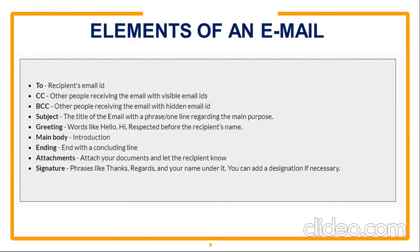So these are the important elements or components of an email: To address, CC, BCC — they are optional. In CC, everybody will come to know each other's email ID — it's like an acknowledgement to the master person. In BCC, though they are receiving the mail, they don't know the other's email ID. Then subject line, and in the body of the email: greeting, main body, ending, signature, then attachment. These are the important components of an email.